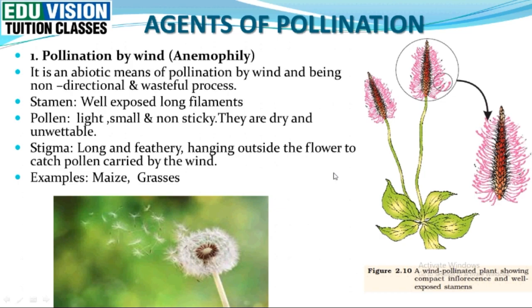Pollen grains in wind-pollinated flowers are light, small, non-sticky, dry, and unwettable. The stigma is long, feathery, and hairy, and it is well-exposed so that it can catch pollen. The main examples are maize and grasses.